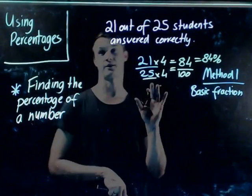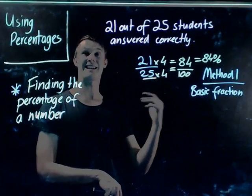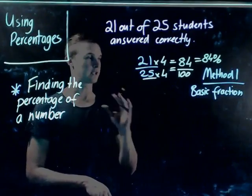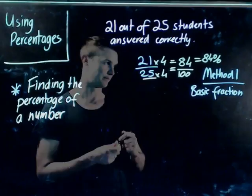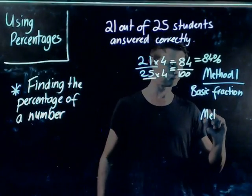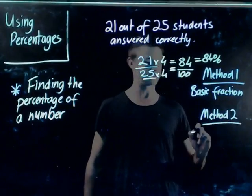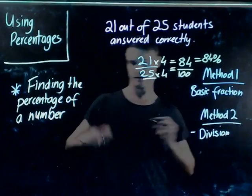Okay, so that's method one. It's only using the basic fraction. Now remember, you can only do that when the denominator is easily able to convert it into 100. Now that's not always the case. If it's not the case, then you need to apply method two.